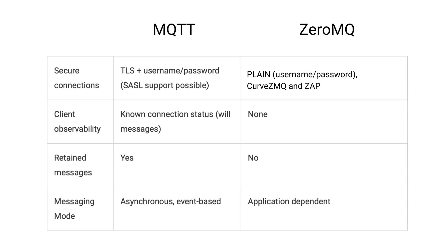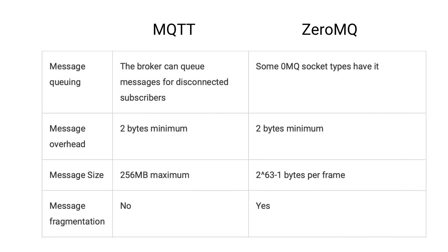A significant advantage of MQTT over ZeroMQ is client observability. MQTT allows the client state to be monitored via notifications when the client unexpectedly disconnects, which is not possible in ZeroMQ. In MQTT, the broker can queue messages for disconnected subscribers, while in ZeroMQ only some MQ socket types have it. The minimum message overhead is the same for MQTT and ZeroMQ at 2 bytes. Message size is 256 MB maximum in MQTT, while in ZeroMQ it is 2 to the power of 63 minus 1 bytes per frame.